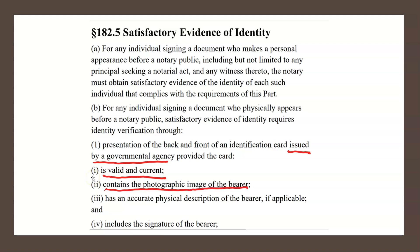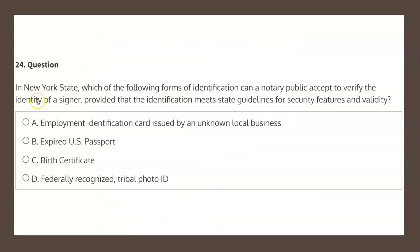With these criteria in mind, let's look at our four choices to determine our solution. We're looking for a valid form of identification. As we just read, the card must be issued by a governmental agency. Because the card in choice A is issued by an unknown local business, this is not a proper form of identification, and therefore choice A is not our solution.